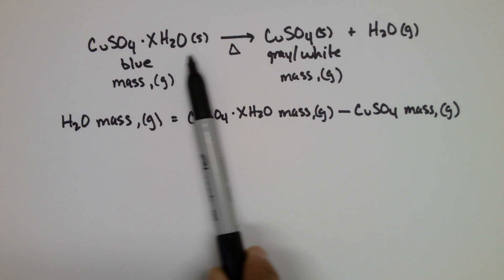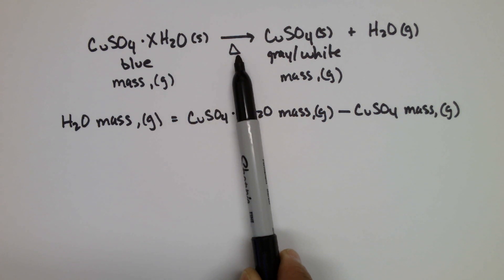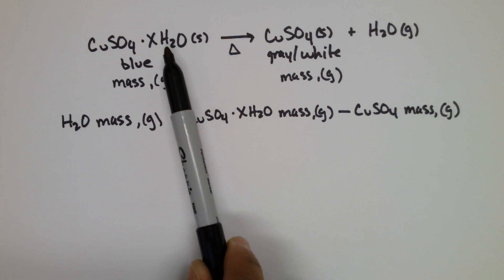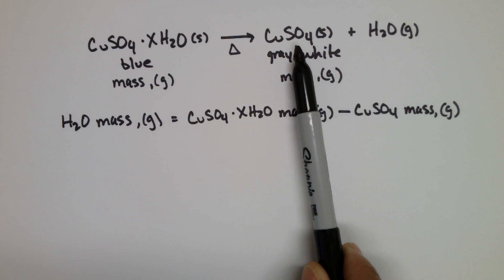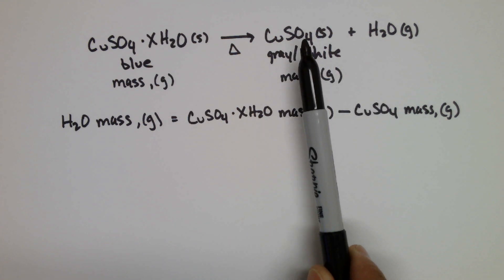We'll determine the original mass and then we'll apply heat. By heating the substance, we'll actually remove the water. The water will evaporate and then what's left over is the copper sulfate by itself.